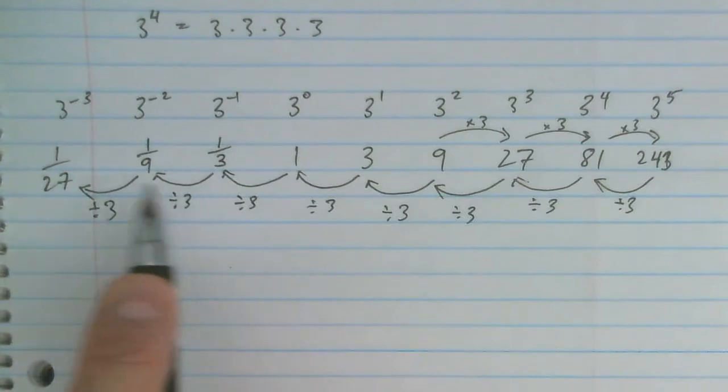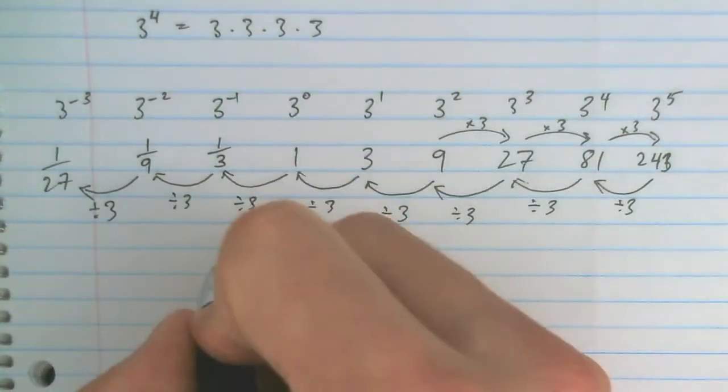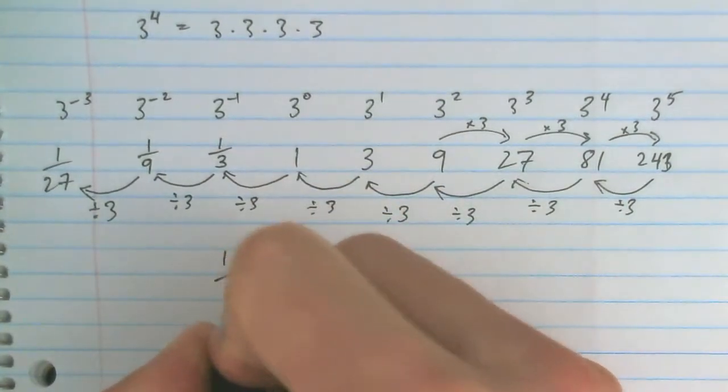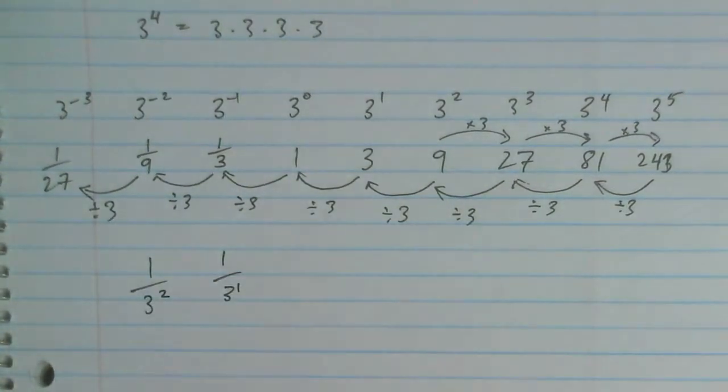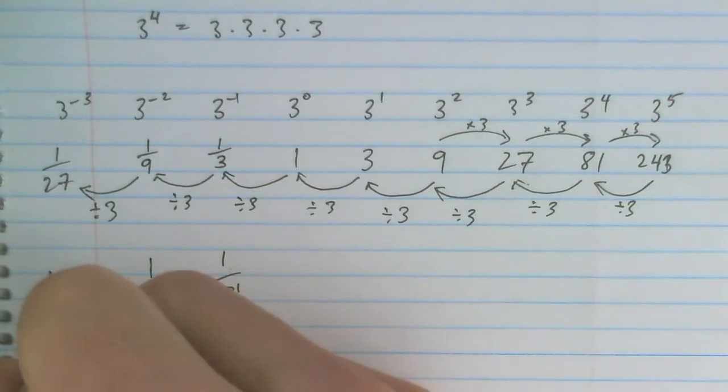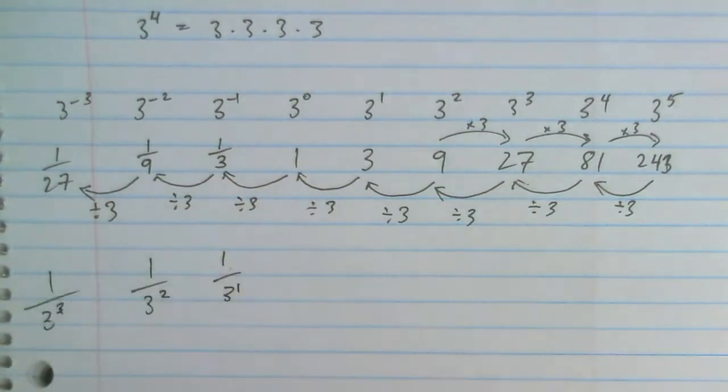So another way of writing these numbers would be 3 to the power of 1, 1 over 3 to the power of 2, or 1 over 3 to the power of 3.